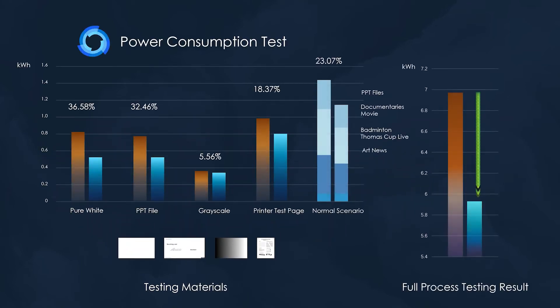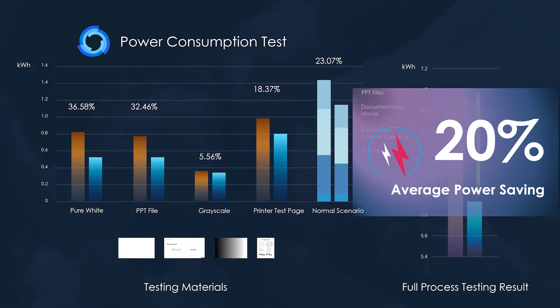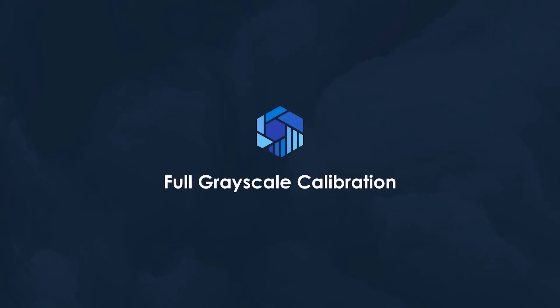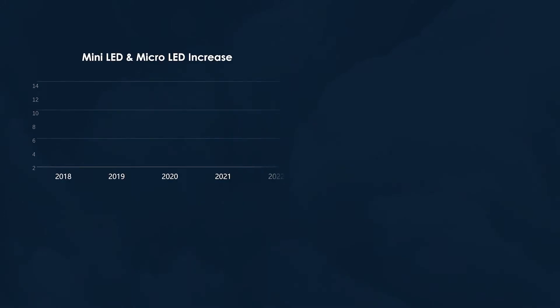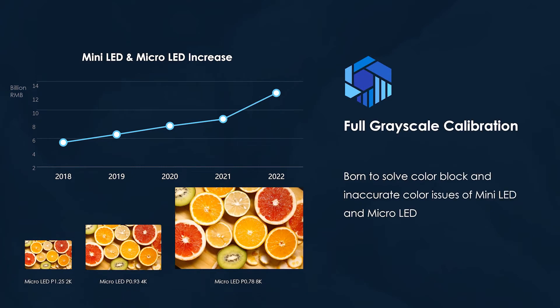A welcome bonus of all this efficiency from Novastar is a very significant reduction in power consumption for your displays. Aside from reducing energy consumption and operating costs, displays that run cooler can be expected to enjoy a longer life with fewer repairs. Most any LED display will greatly benefit from Novastar's full grayscale calibration, but none more so than the newest mini and micro LED technologies that we are starting to see in ultra-fine pixel displays. Full grayscale calibration will help you address these very serious issues.